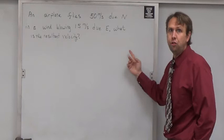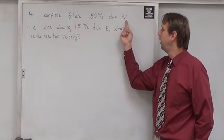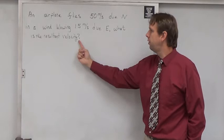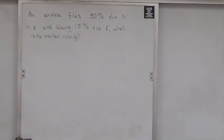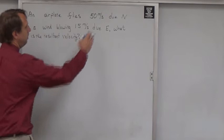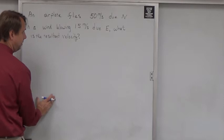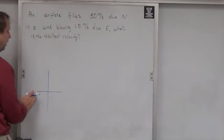Let's look at this example. An airplane flies 50 meters per second due north, and a wind blowing 15 meters per second due east. What is the resultant velocity? The first thing I'm going to do to solve this is to sketch my axis. If I'm actually going north and east, I probably want to start fairly far down to the south and to the west. That way I give myself plenty of room.